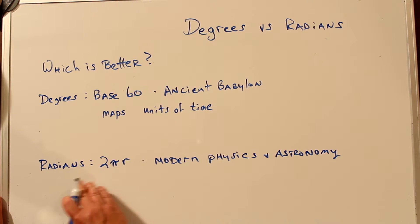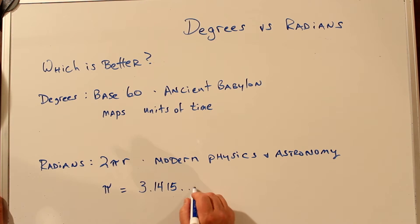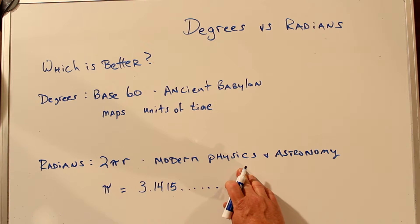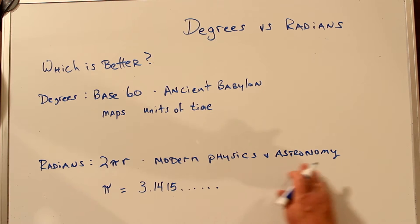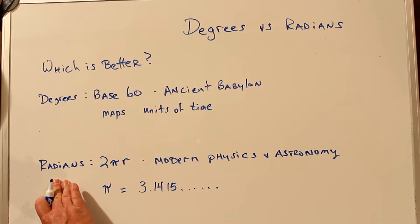Radians are based on the formula for a circumference of a circle, 2 pi r. And pi is known to many, many decimal places. So in modern physics, when we're measuring things that are very small, or in astronomy, where we're measuring things that are very large, we can use a lot of decimal places that are already known for pi to calculate these quantities. This is why, in physics and astronomy and other sciences, radians are the preferred unit of measure.